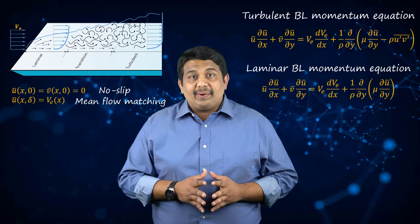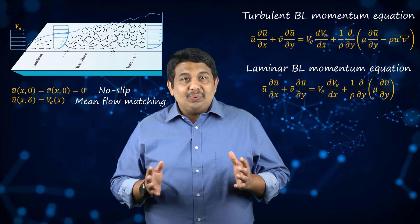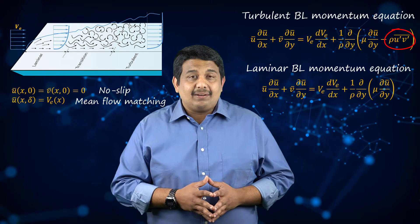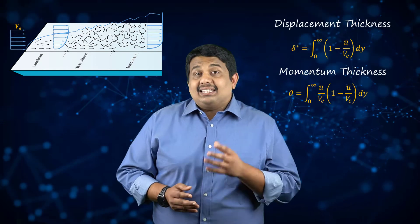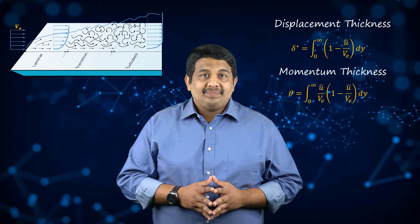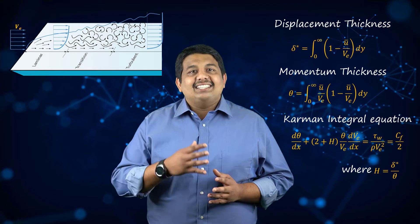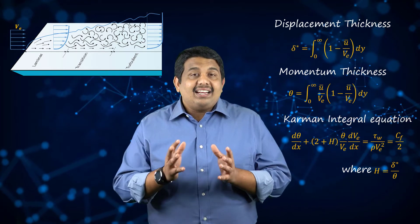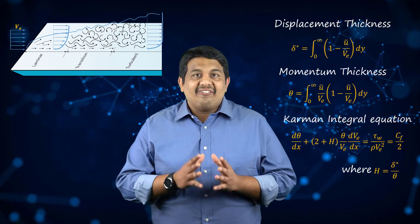Recollect the axial momentum equation from the laminar boundary layer. The only difference between these two equations is the presence of the Reynolds stress term in the turbulent boundary layer equations. From the integral forms of conservation of mass and momentum equations, we know the displacement thickness and the momentum thickness of the boundary layer. The Karman momentum integral equation, obtained by manipulating the continuity and momentum equations, is shown here. This equation, written in terms of the displacement and momentum thickness, is also valid for turbulent boundary layers.